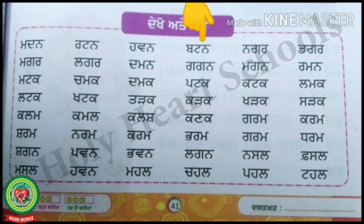Lalaggan na — lagan. And the last word of this line is chachaha lala — chahel. Now look at the fifth line and start reading. The first word is nanna gagga rara — nagar. Then mamma gagga nanna — magan.